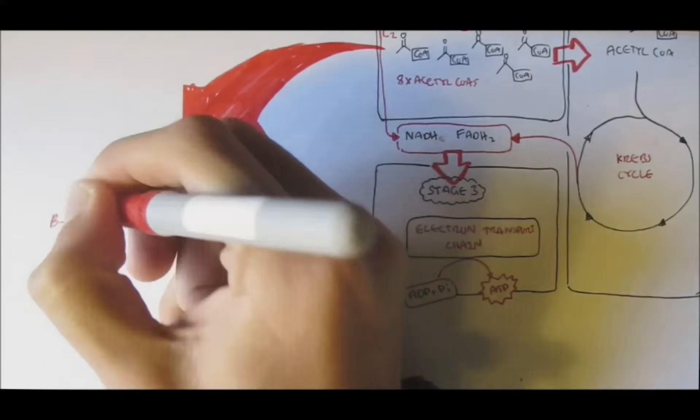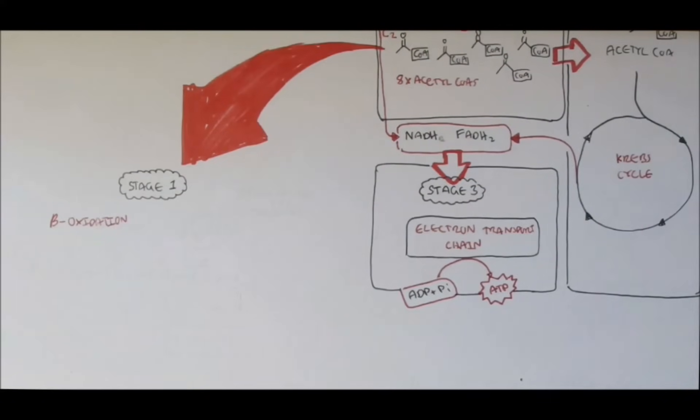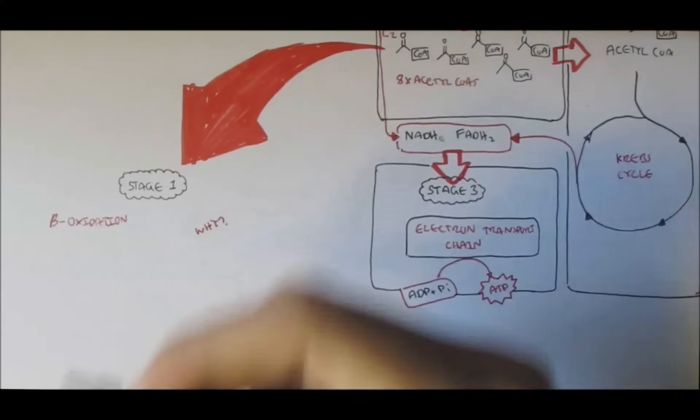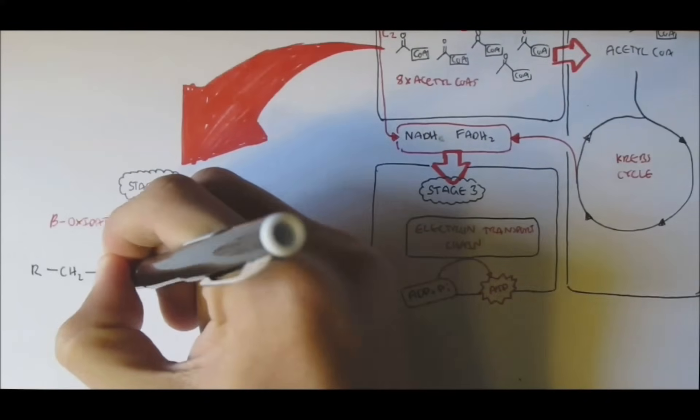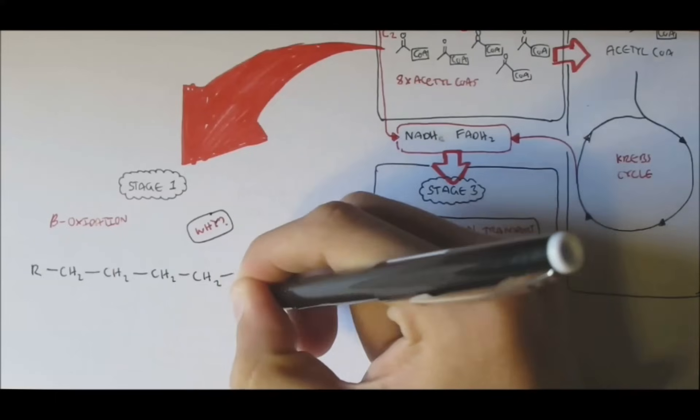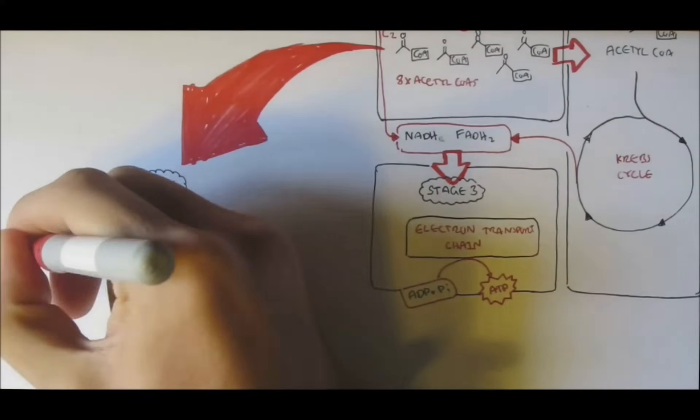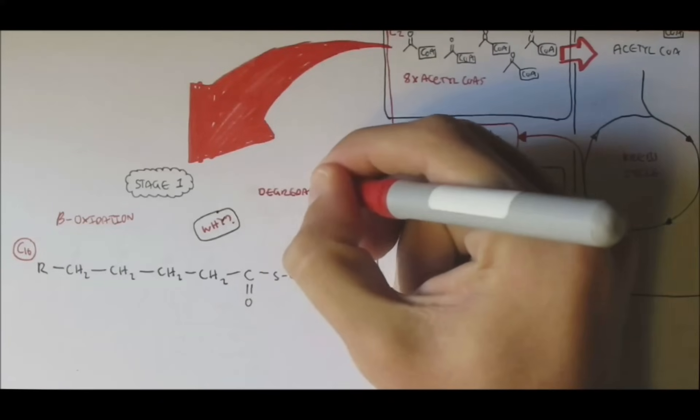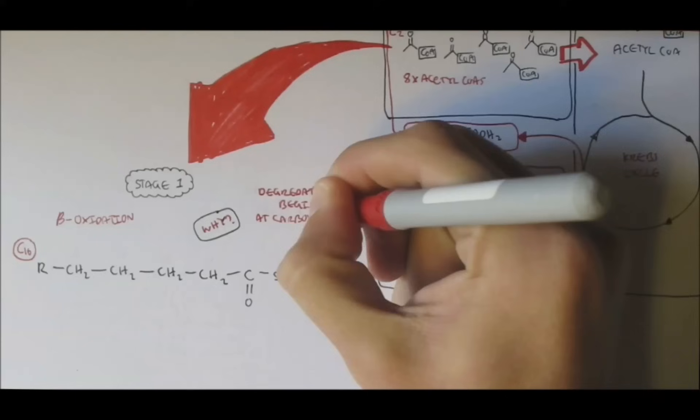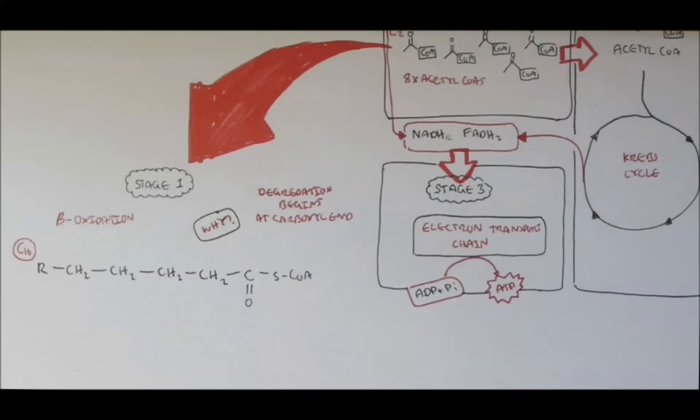So beta-oxidation, what is it? And why beta? Why not alpha, for example? Well, if we take a single fatty acyl-CoA, such as palmitoyl-CoA, which is a 16-carbon fatty acyl-CoA, degradation of fatty acids begin at the carboxyl end. So here is a carboxyl end here.